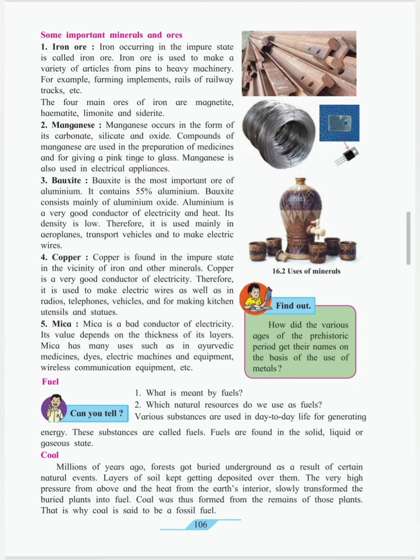Magnesite occurs in the form of its carbonate, silicate and oxide. Compounds of magnesite are used in the preparation of medicines and for giving a pink tinge to glass. Magnesite is also used in electrical appliances.